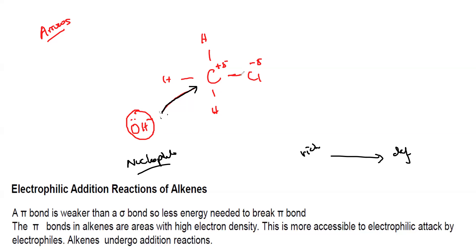In the same way, if we have a carbon and a chlorine, and the carbon–chlorine bond is breaking — showing the movement of electrons — how will the electrons move?